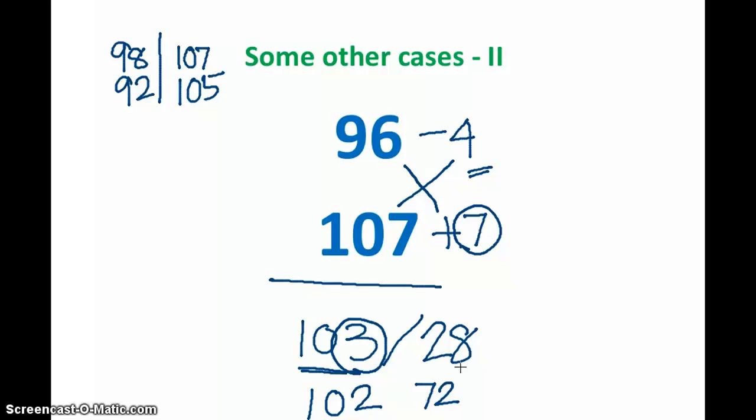So I'll just take one more example here. Let's say we want to multiply 85 and 105. So one number is less than 100 and other number is more than 100. This number, 85, is 15 less than 100, and 105 is 5 more than 100.